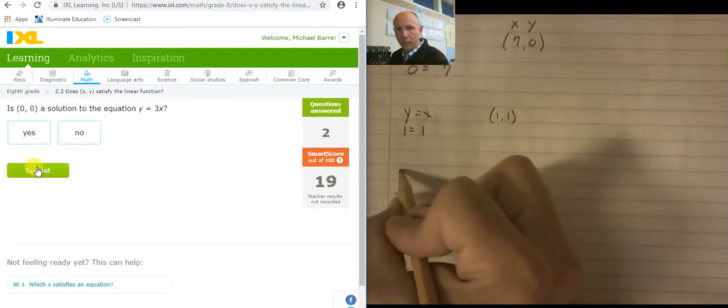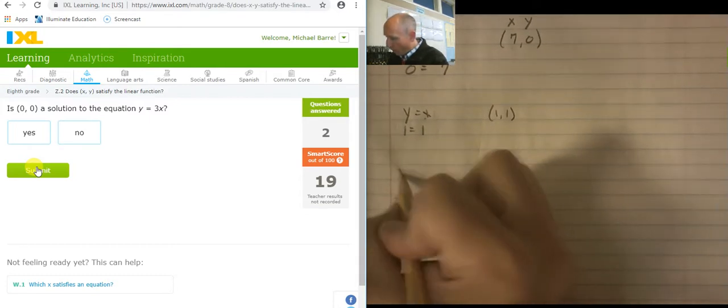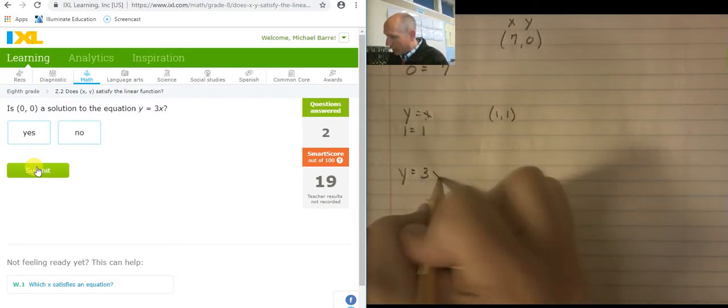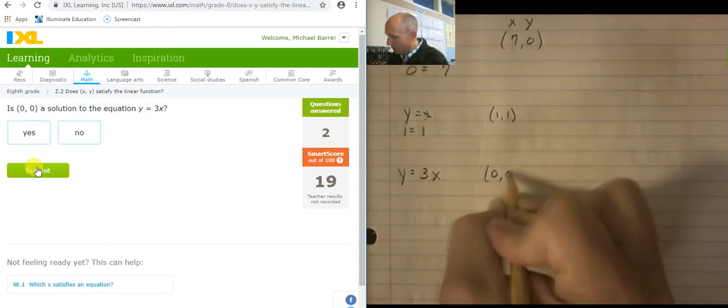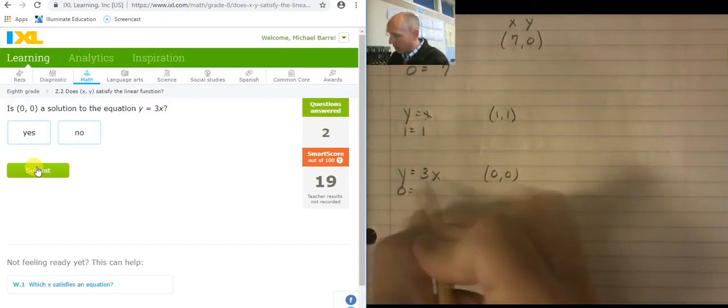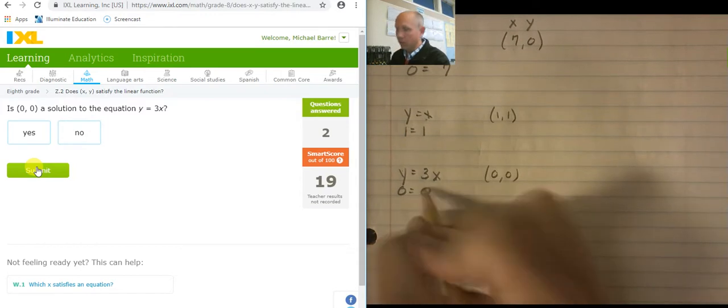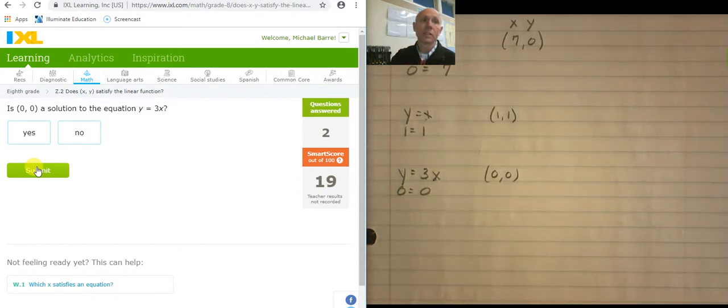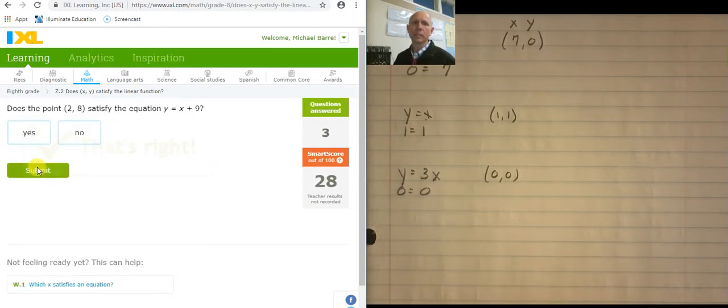Next one, y equals 3x and I'm looking at 0, 0. I plug in a 0 here, 0. Plug in a 0 here. So 3 times 0, 0. 0 equals 0. True or false? Yes. Not true or false. Yes or no? Yes. It is a solution.